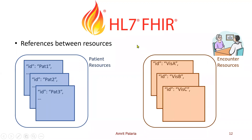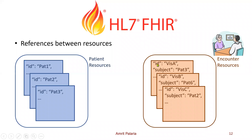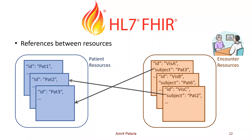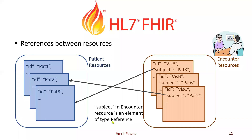The patient resources and encounter resources each have their own IDs. What happens is you create a specific data element — and these keys come from the FHIR specification — and in the encounter resource there will be a key that allows you to link it to a patient resource. For encounter, it's called 'subject.' By defining that subject you can say this encounter is for patient three. These data elements are of type 'reference' — and that's what references between resources means.